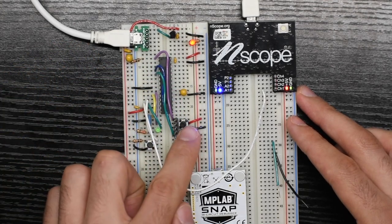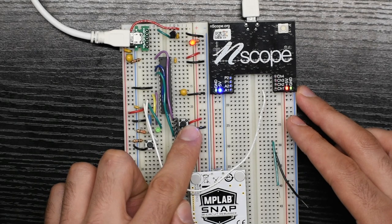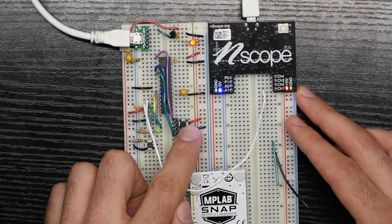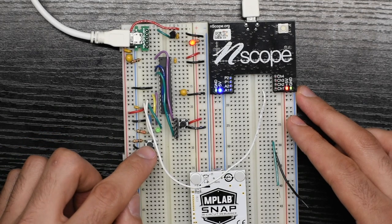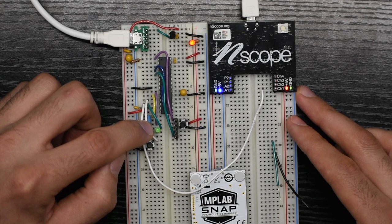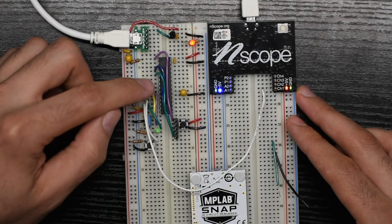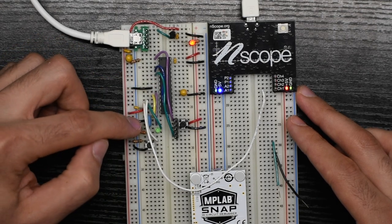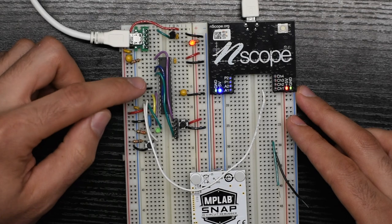We've got a reset button so when we push that the PIC stops the code it's running and starts over from the beginning. I've got a user button and a user LED. This little blue chip is our crystal resonator at 8 megahertz. The PIC internally is taking that 8 megahertz and turning it into 48 megahertz.